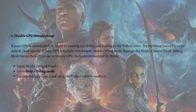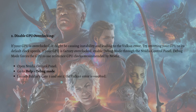Next, what you can do is disable GPU overclocking. If your GPU is overclocked it might be causing instability and leading to a Vulkan error, so try reverting your GPU to its default clock speeds. If your GPU is factory overclocked, enable debug mode through the Nvidia control panel, which forces the GPU to use reference clock speeds recommended by Nvidia. Open the Nvidia control panel, go to Help, then Debug Mode, and launch Baldur's Gate 3 to see if the Vulkan error is resolved.